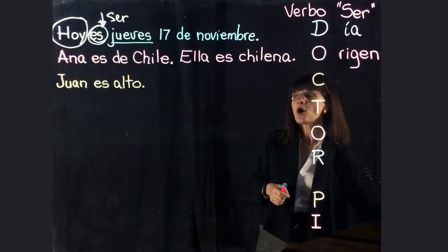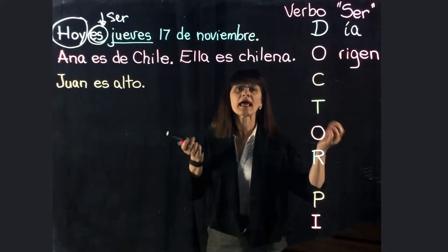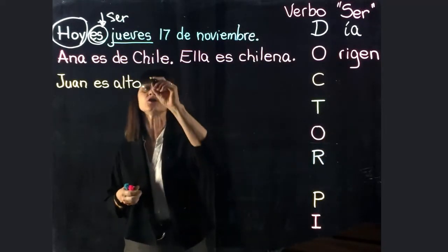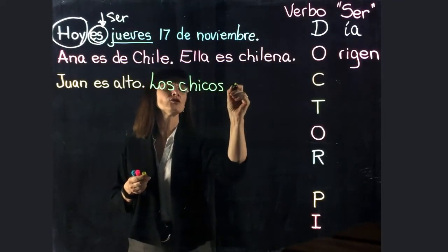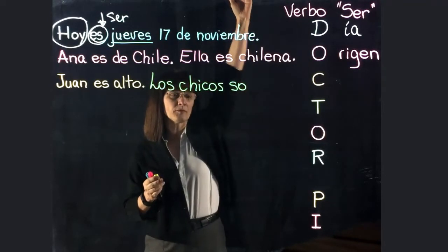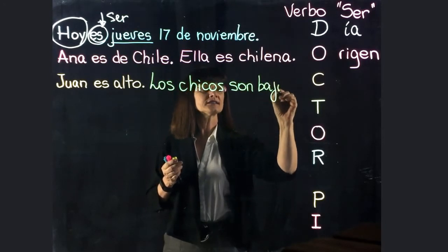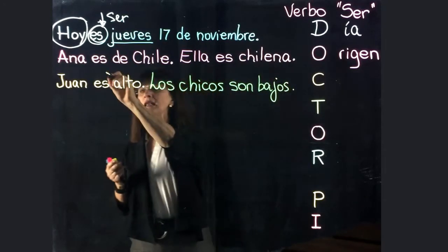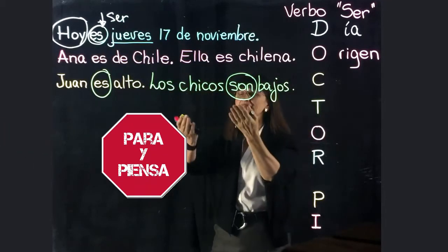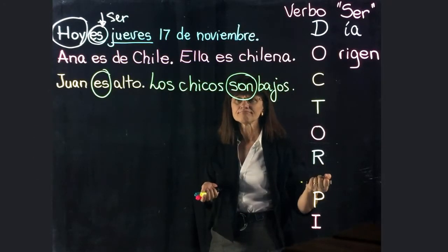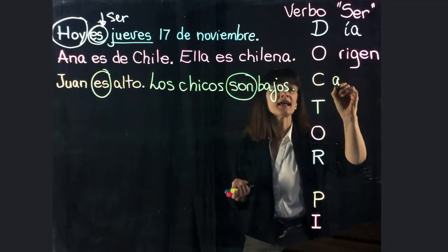Vamos a la siguiente oración: Juan es alto. Vamos a usar una oración en plural — los chicos son bajos. Juan es alto, pero los chicos son bajos. Muy bien. Estamos usando singular 'es' y plural 'son'. Para y piensa, ¿cuál es la regla? ¿De qué estamos hablando? Muy bien. Estamos hablando de características.